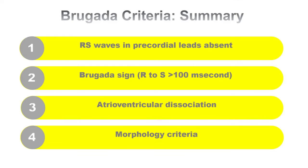Let's summarize the Brugada criteria. There are four steps. Step one: are there any concordant QRS complexes in precordial leads V1 to V6? If present, this is VT; if not, this is SVT with aberrancy. Step two: is the R-to-S interval from the beginning of the R wave to the nadir of the S wave more than 100 milliseconds? If present, this is VT; if not, possibly SVT. Step three: is there atrioventricular dissociation? If present, this is VT; if not, possibly SVT with aberrancy.